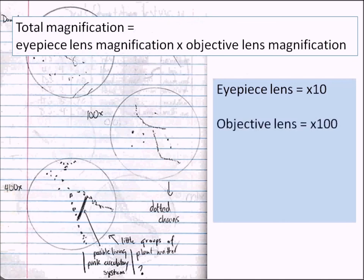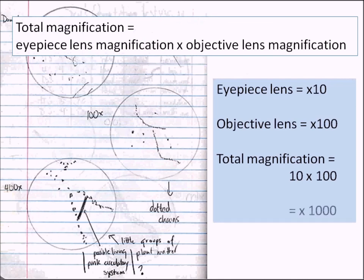Using an example with an objective lens of times 100, the total magnification is 10 times 100, giving a total magnification of times 1000. This simply means that the image you're seeing is 1000 times bigger than the actual specimen on your slide.